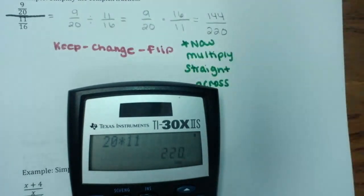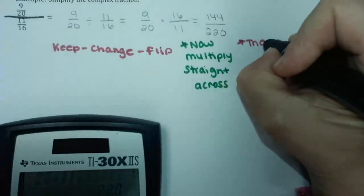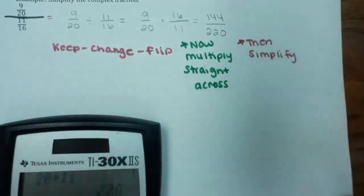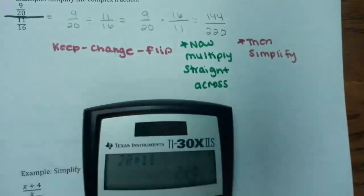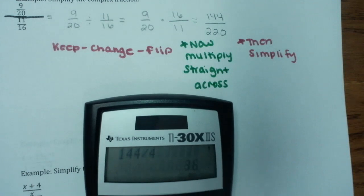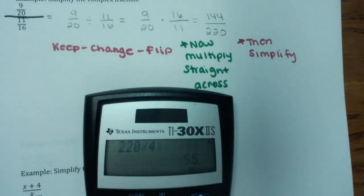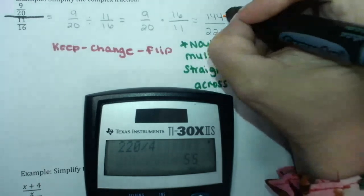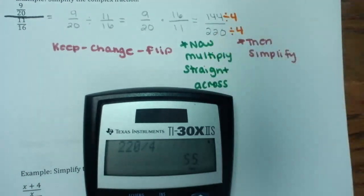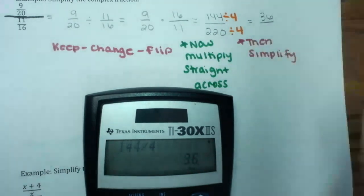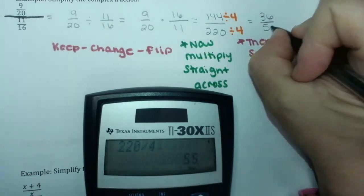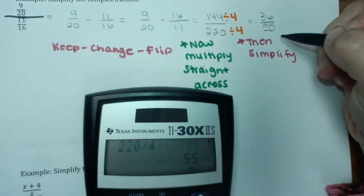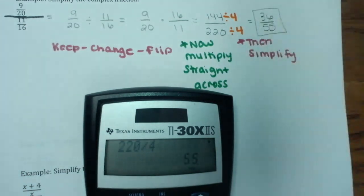Our last step is to simplify. We always want to simplify our fractions. What do 144 and 220 have in common? They both have a factor of 4. 144 divided by 4 gives us 36, and 220 divided by 4 gives us 55. So let's divide out that GCF of 4 from top and bottom. We get 36 over 55. There's nothing that 36 and 55 have in common, so this is our final answer.